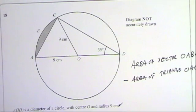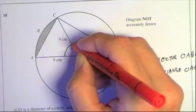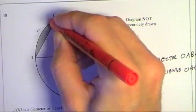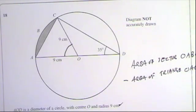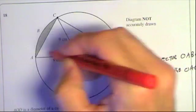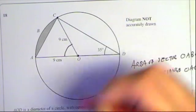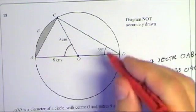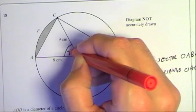For both of those I need to know the angle at centre O, because that's the angle for the sector and for the triangle formula. The angle at the centre is twice the angle at the circumference. They've given us 35 degrees at the circumference, so the central angle is 70 degrees.